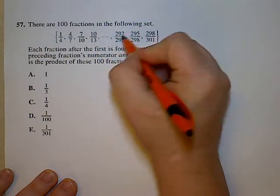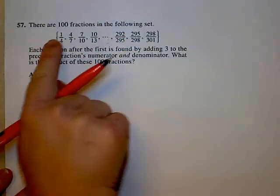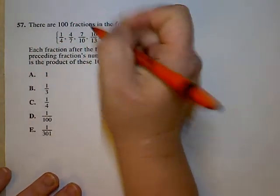The number down below here at the end would be 292 as the denominator. So I need to multiply all of these, and we can first simplify.